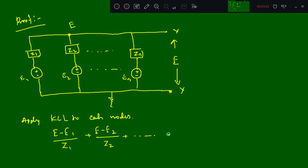This will go on continuation. The next step here I am going to extract the value, that is E divided by Z1 minus E1 divided by Z1 plus E divided by Z2 minus E2 divided by Z2. This will continue till E divided by Zn minus E1 divided by Zn equal to 0.